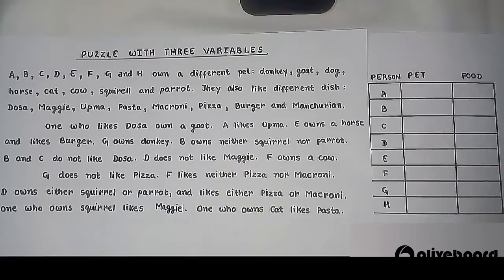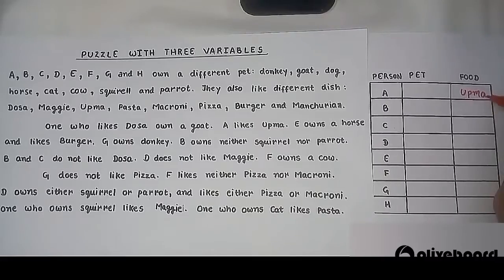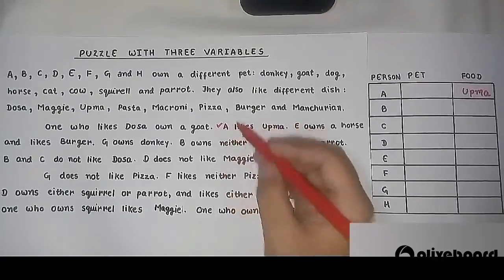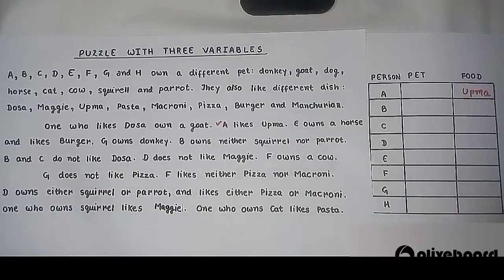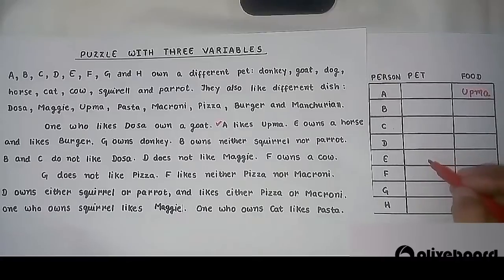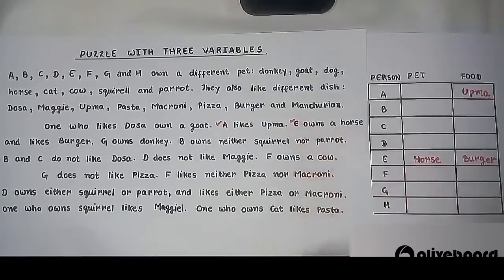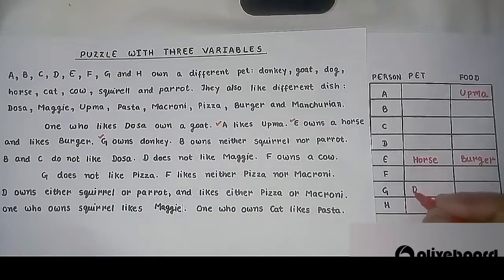The first condition says: one who likes Dosa owns a goat, which means Dosa and goat is a pair. The next statement says A likes Upma — this is a solid statement, so I am writing Upma for A. The next statement says E owns a horse and likes Burger — again a direct statement, so I write horse and Burger for E. The next statement says G owns a donkey — again directly written.